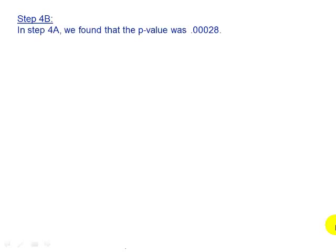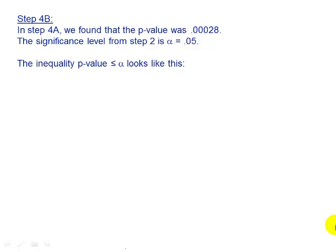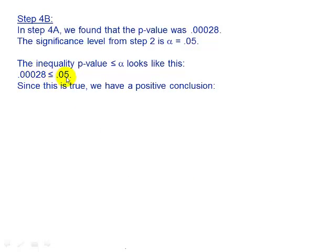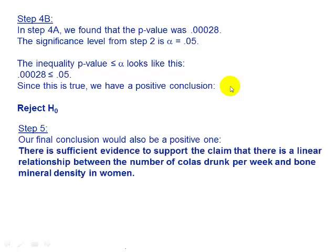Our next step is to compare our p-value to alpha and get our initial conclusion. Our p-value is 0.00028 and our alpha was 0.05. Since 0.00028 is less than or equal to 0.05, this is a true inequality and we have a positive conclusion: reject the null hypothesis. For step five, we write our final conclusion in a sentence: there is sufficient evidence to support the claim that there is a linear relationship between the number of colas drunk per week and bone mineral density in women.